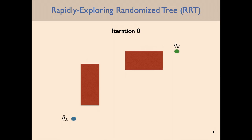RRTs were introduced around the year 2000 — a little more than 20 years ago — and became popular very quickly. Within just a few years, people were using them for all sorts of different motion planning problems. Part of the appeal is that they're very simple to implement, as you'll see in the next homework assignment. They're relatively straightforward to understand in terms of the algorithmic procedure, and they get around the technical challenges of discretizing your configuration space.